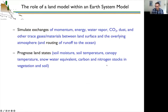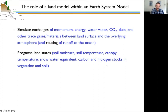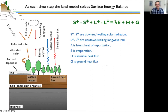Fundamentally, the role of a land model within an Earth system model is to simulate exchanges of momentum, energy, water vapor, CO2, dust, and other trace gases between the land surface and the overlying atmosphere, and the routing of runoff to the ocean. To do that, we need to prognose the land states — soil moisture, soil temperature, canopy temperature, snow water equivalent, carbon and nitrogen stocks, and vegetation state.